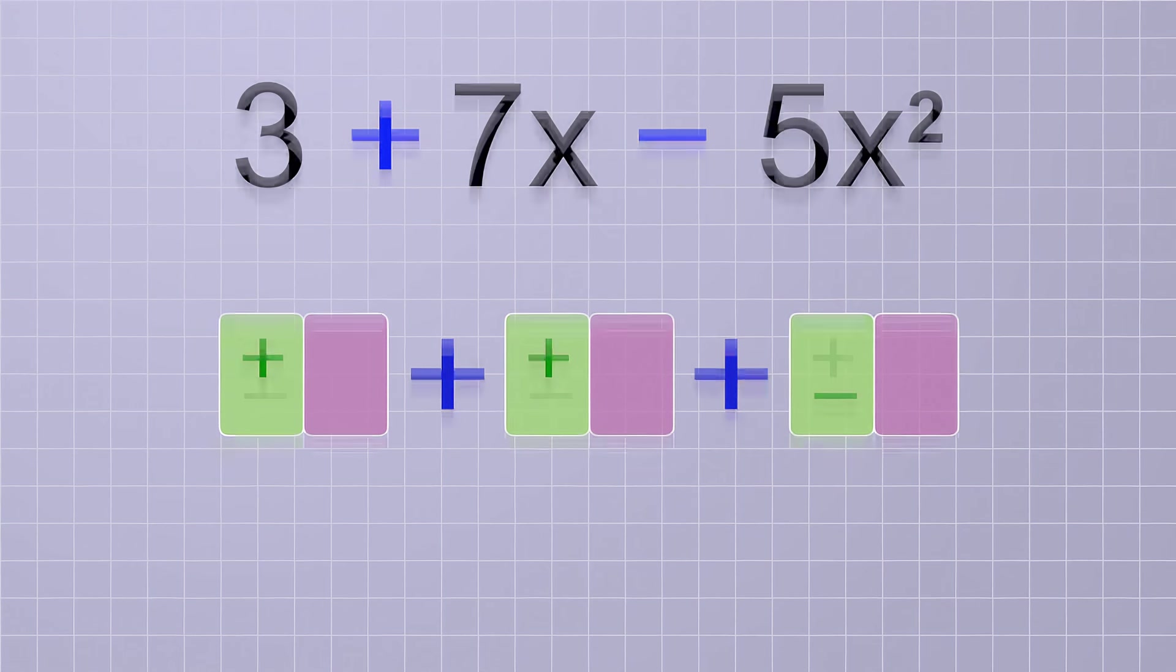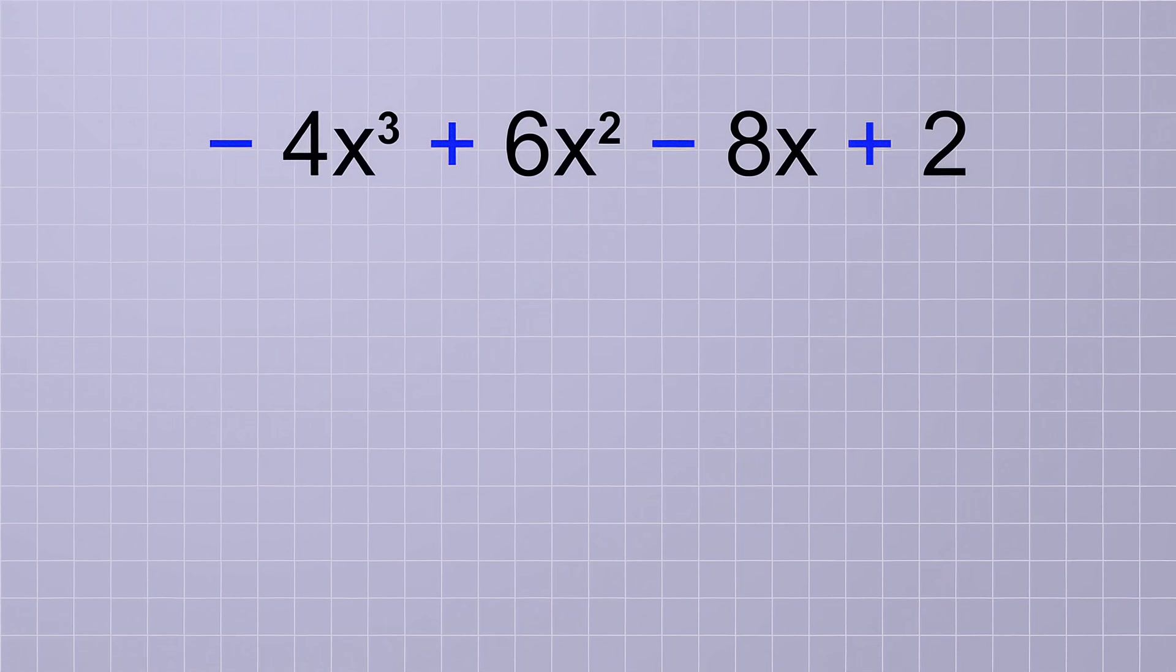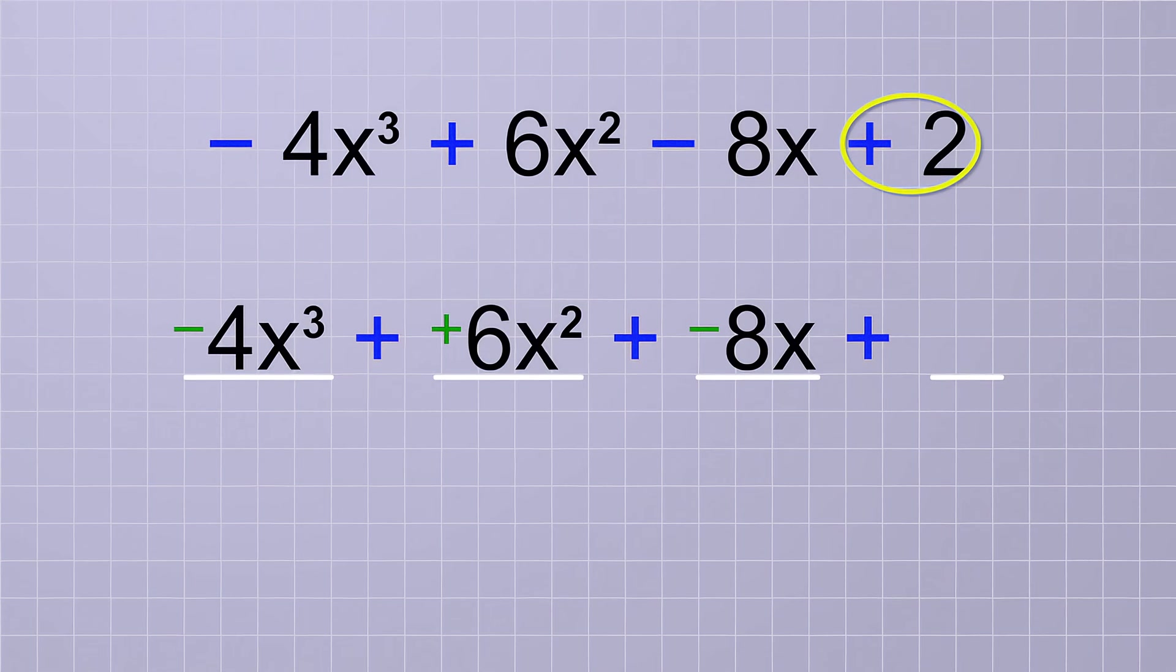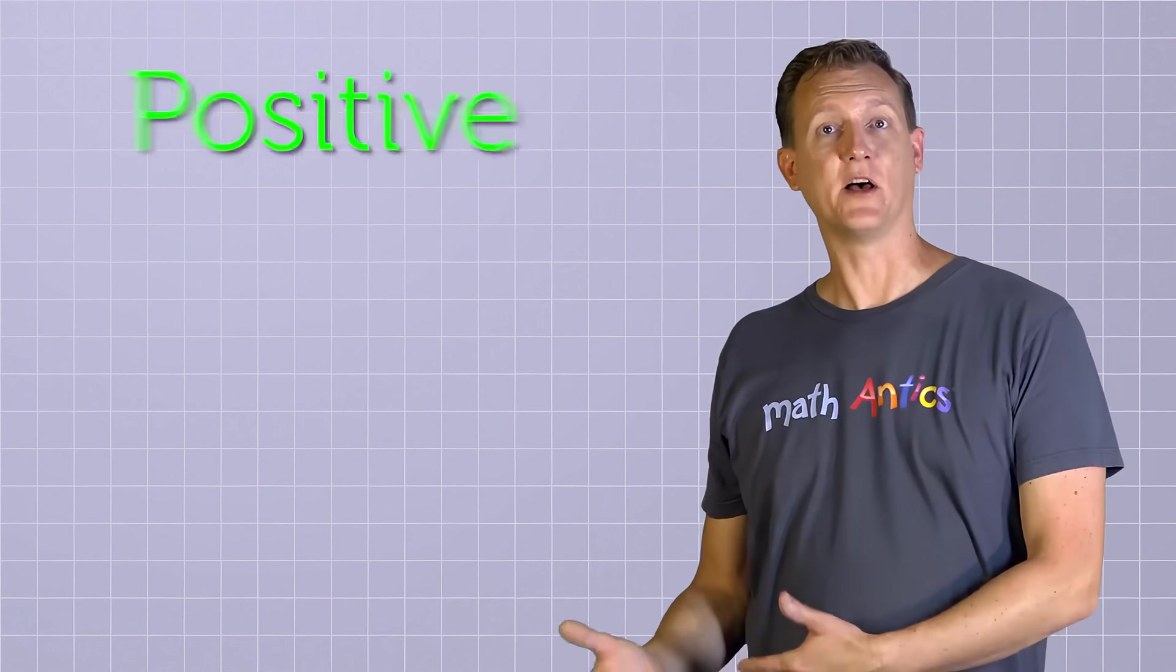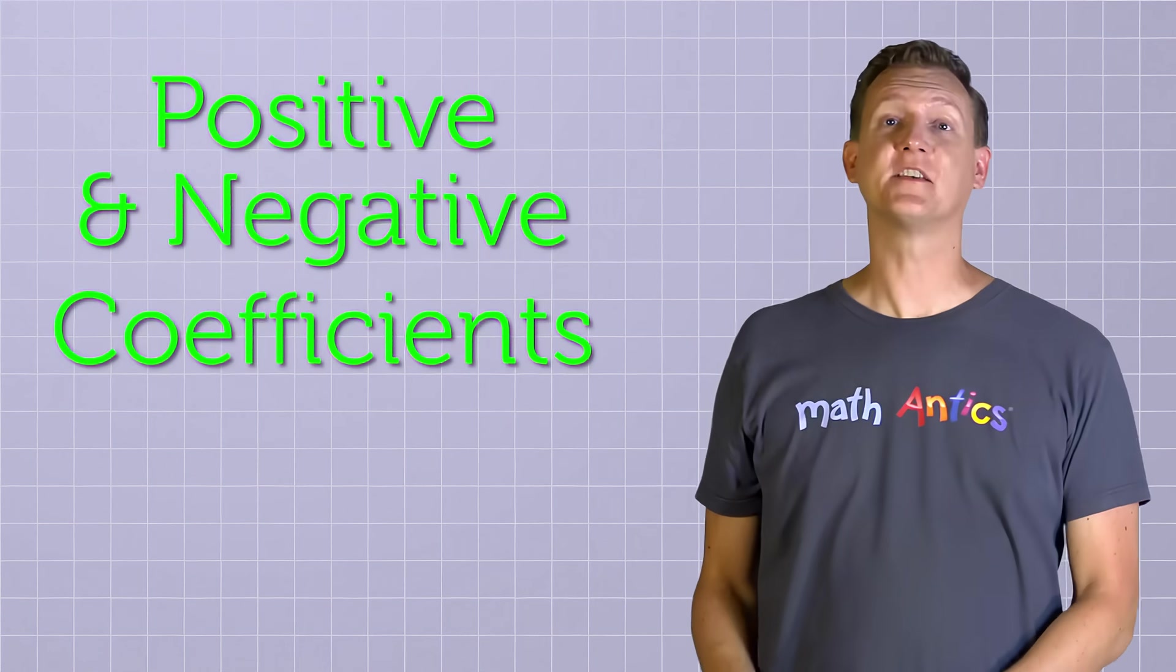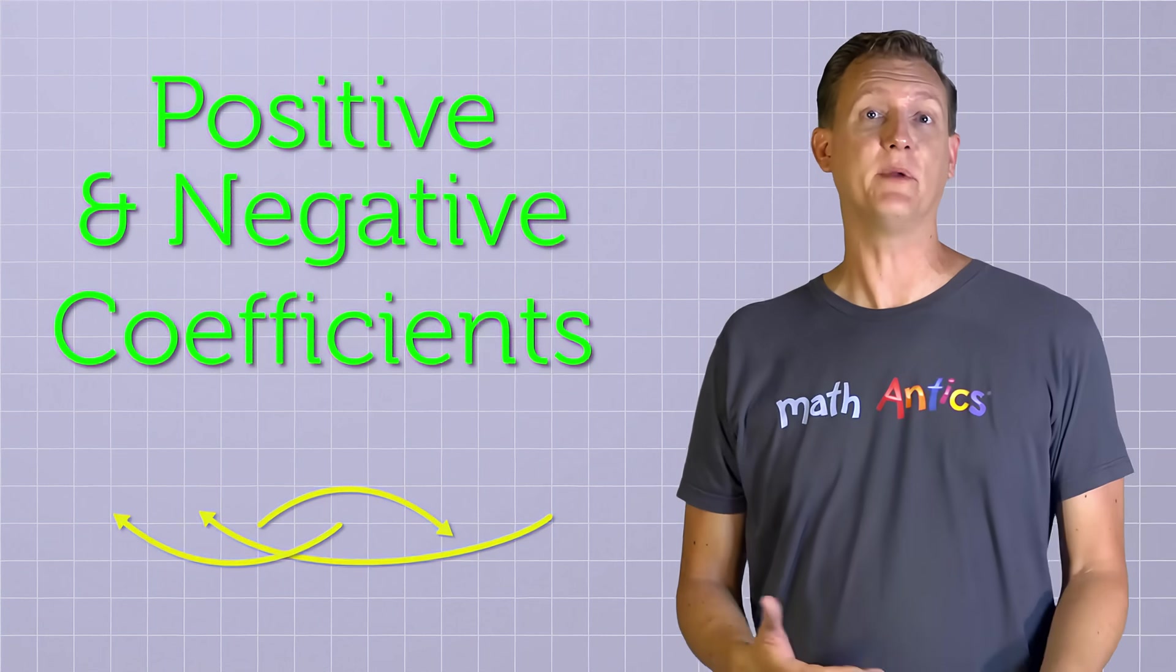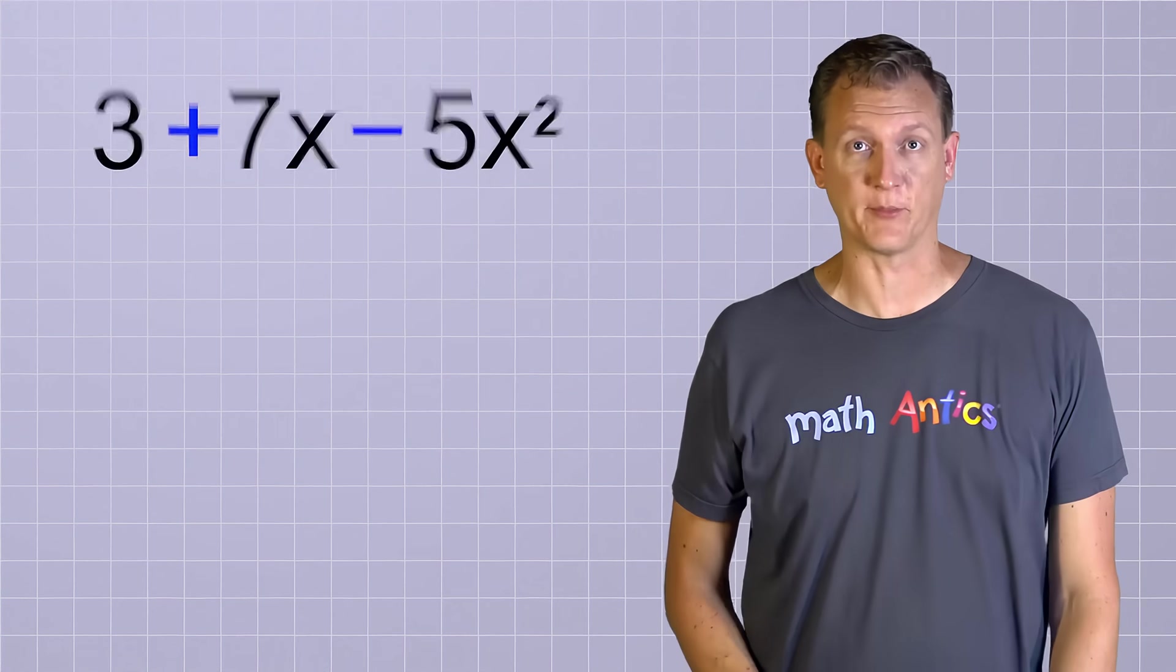For example, if you have this polynomial, you should treat it as if all of the terms are being added together and use the sign that's directly in front of each term to tell you if it's a positive or a negative term. The first term has a coefficient of negative 4, so it's a negative term. The next term has a coefficient of positive 6, so it's positive. The next term has a coefficient of negative 8, so it's negative. And the constant term is just positive 2. And recognizing positive and negative coefficients helps us a lot when rearranging polynomials that have a mixture of positive and negative terms, like our example here.